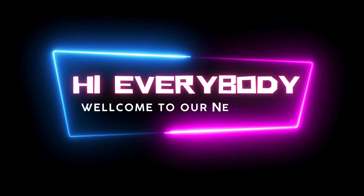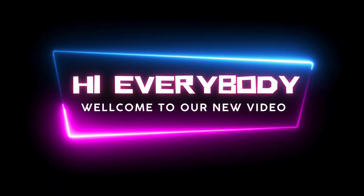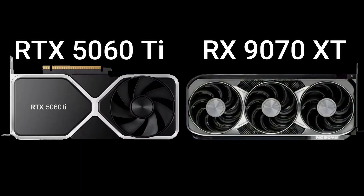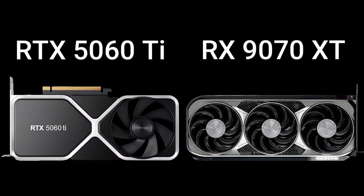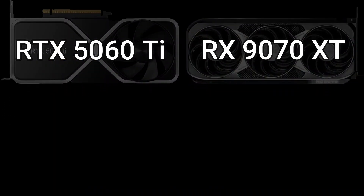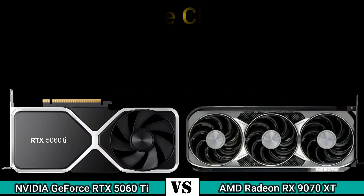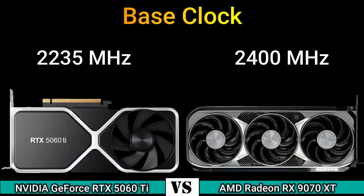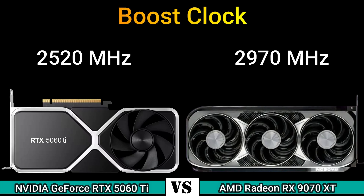Hi everyone, welcome to our new video. Today I will compare two GPUs in this video, so let's go. Firstly, we start with performance: base clock 2235 MHz and 2400 MHz; boost clock 2520 MHz and 2970 MHz.